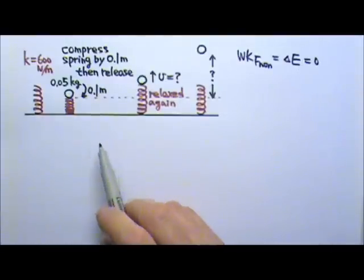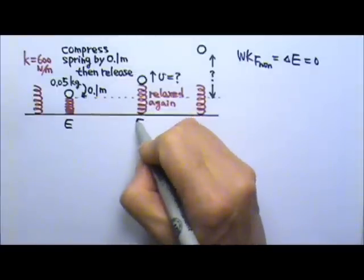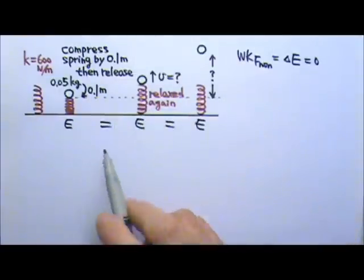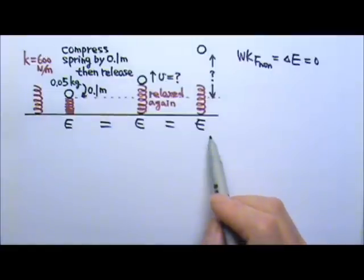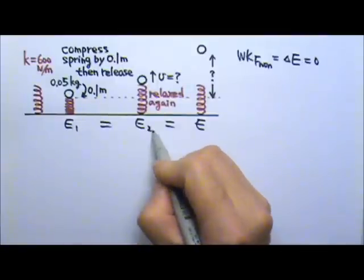So the total mechanical energy is the same at the beginning, at this stage, and at the maximum height. I can call this initial, final one, final two, or I can just call these stages 1, 2, 3.